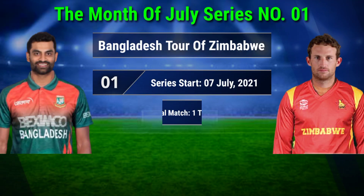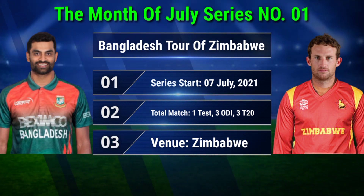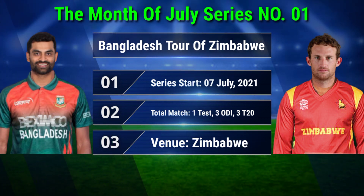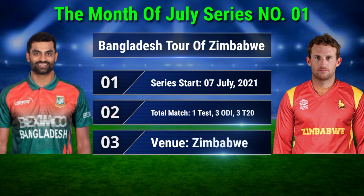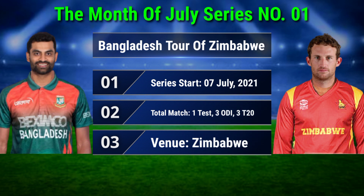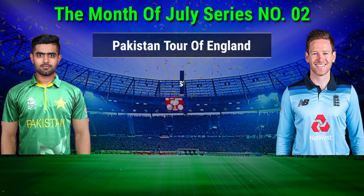Series No. 1: Bangladesh Tour of Zimbabwe. Series starts 7 July 2021. Total matches: 1 Test, 3 ODI, and 3 T20. Venue: Zimbabwe.